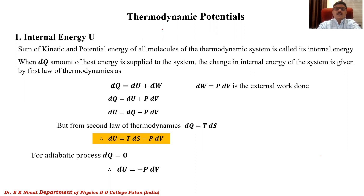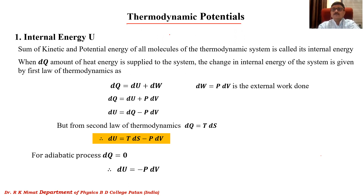Now we'll start the first chapter of this paper, which is thermodynamic potentials. Let us revise the things we have discussed in thermodynamics and statistical mechanics in the earlier semester. We know that a thermodynamic system is defined by four important thermodynamic variables: pressure, temperature, volume, and entropy.